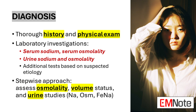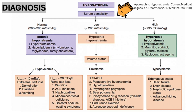Laboratory investigations form the cornerstone of hyponatremia diagnosis. Serum sodium measurement confirms the diagnosis, with values below 135 millimoles per liter indicating hyponatremia. Serum osmolality is a key test that helps differentiate between hypotonic, isotonic, and hypertonic hyponatremia. Urine sodium and osmolality provide valuable information about the kidney's handling of sodium and water, which is crucial in determining the cause. A stepwise approach typically involves first determining serum osmolality, then assessing volume status, and finally evaluating urine sodium, urine osmolality, and fractional excretion of sodium.